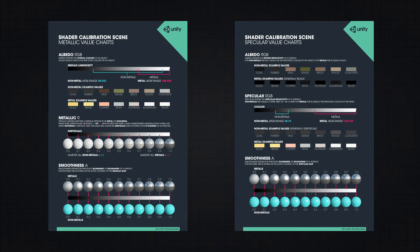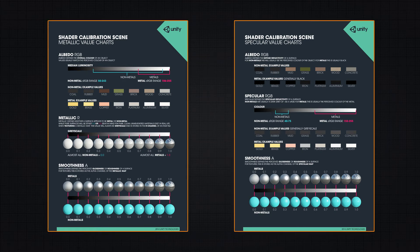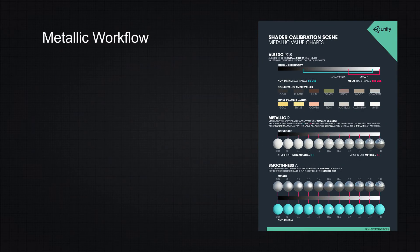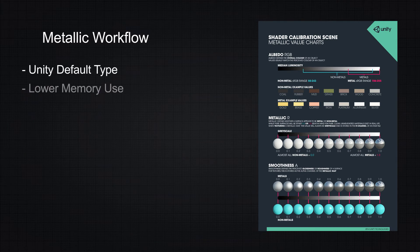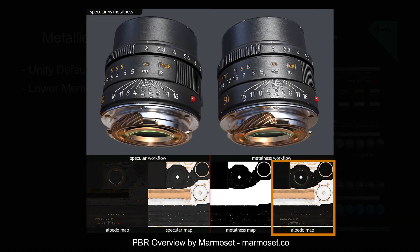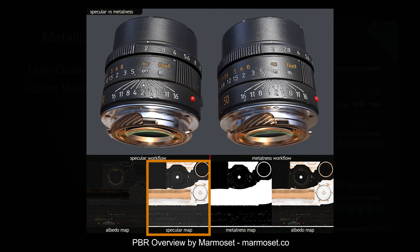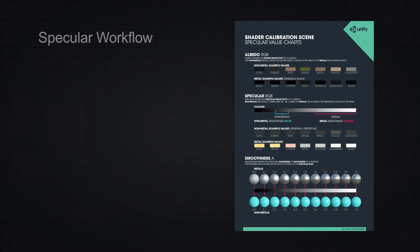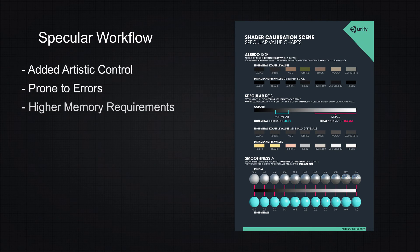Unity supports two types of workflows: metallic or specular. Both may be used to achieve similar results, and each has its respective pros and cons, but that's outside of the scope of this introductory video. For now, we'll be focusing on the metallic workflow since it's the most commonly used and the default type in Unity, being simpler and requiring less texture memory than a full specular workflow. In short, metallic specular highlight color is derived from the albedo, while specular lets you specify which color you want for the highlights in a specific RGB texture. It's recognized for its added artistic control, but more prone to errors and higher memory requirements.